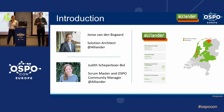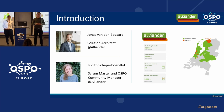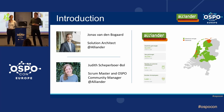For those who are not familiar with Alliander, let me give you a quick overview. Alliander is the largest distribution system operator in the Netherlands. We develop and operate energy networks. We have nearly 6 million customer connections and manage over 90,000 km of electricity grid and over 40,000 km of gas grid.